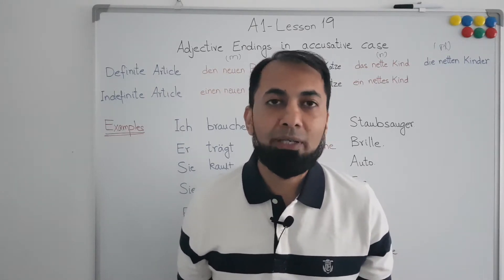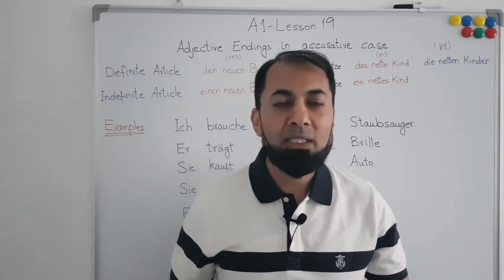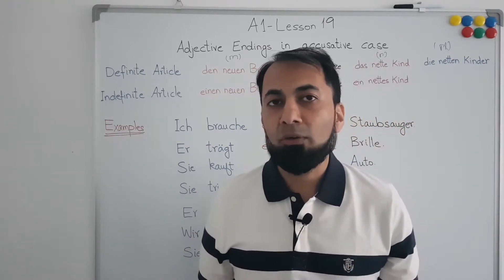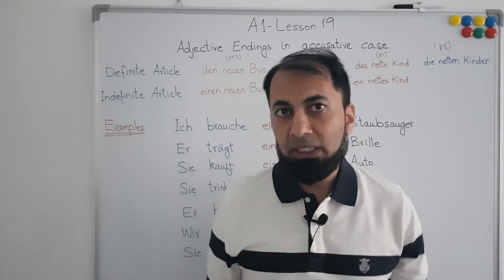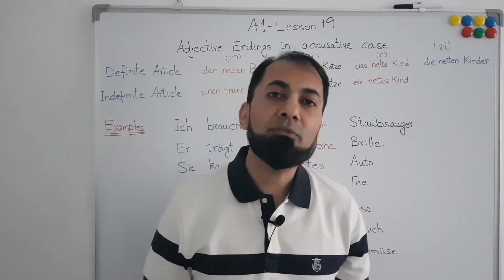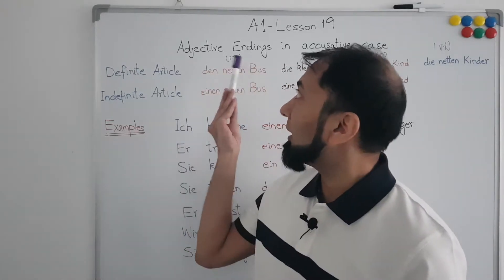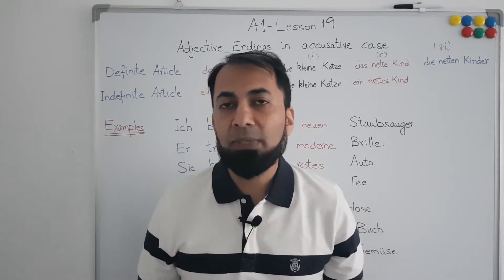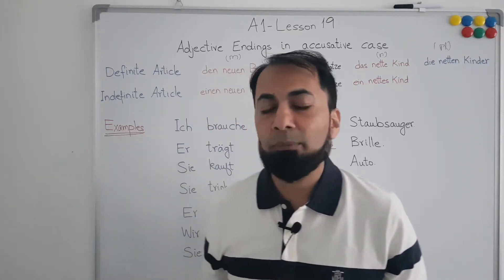An adjective describes some property or characteristic of a noun — this property can be new, old, big, small, beautiful, etc. In German, every noun has a gender, and based on that gender we have to take many things into consideration. Adjective endings are one of these things — we must check which case we are in and what gender the noun is. Since we are talking about the accusative case, one thing is fixed, but the gender of the noun will still vary.